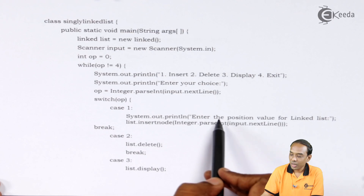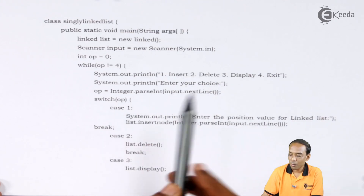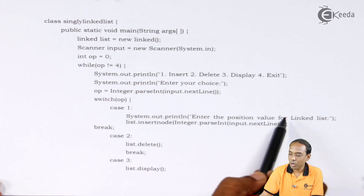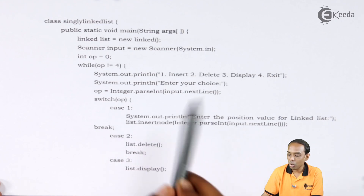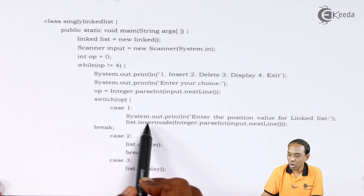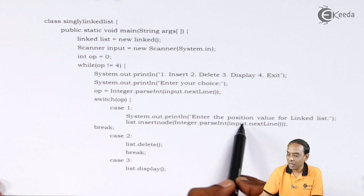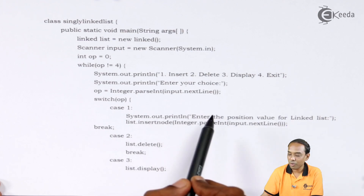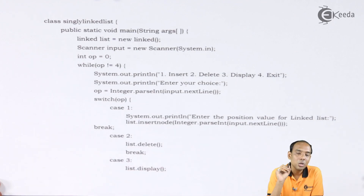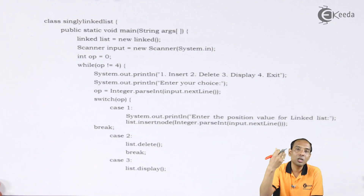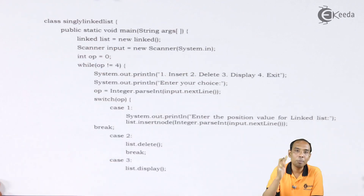Case one is for insertion of values. I write down system dot println 'enter the position value for the linked list', and that is stored in list. I call list dot insertNode, passing the value through integer dot parseInt input dot nextLine. So I take the position value for where I need to insert into the linked list. Using the insertNode function I insert the node into the list. Then I write down the break statement to come out of that particular case.